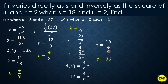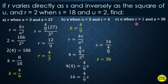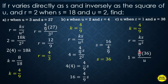For the third part, find U when R = 1 and S = 36. Using the same constant K = 4/9, substitute: 1 = (4/9)(36)/U². Since 36/9 = 4, so (4/9)(36) = 16, giving U² = 16. Dividing: 1 · U² = 16, so U² = 16, and U = 4.